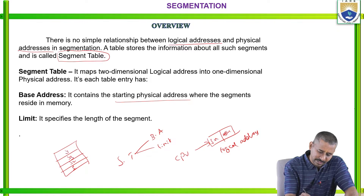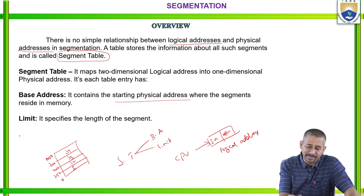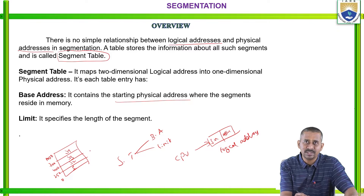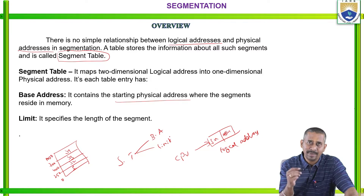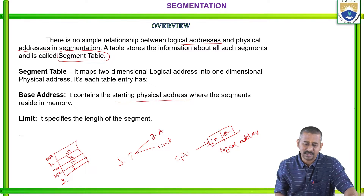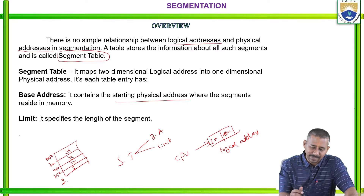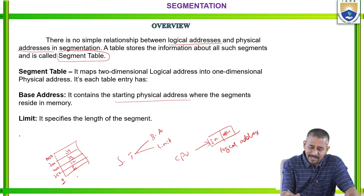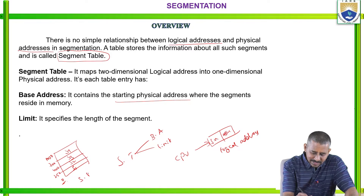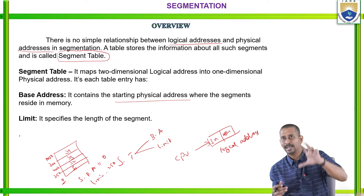For example, considering segments 1 through 4 with starting addresses 0, 250, 400, and 700 — the segment table maps two-dimensional logical addresses into one-dimensional physical addresses. Each segment table entry consists of a base address and a limit. For segment 1, the starting physical address is 0, whereas the limit is 250, because the limit specifies the length of the segment.